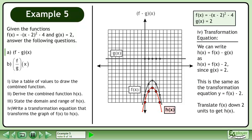We can write h = f - g as h(x) = f(x) - 2 since g(x) = 2. This is the same as the transformation equation y = f(x) - 2. Translate f down 2 units to get h(x).